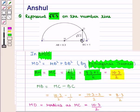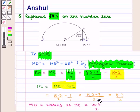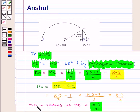Also, MB can be written as MC minus BC. We know MC equals 10.3 by 2, so taking LCM, MB equals 10.3 minus 2, all over 2, which equals 8.3 by 2. Also, MD is the radius of the semicircle, equal to MC, and therefore MD equals 10.3 by 2. Now we know the values of MD and MB.